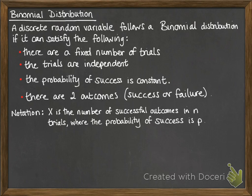And the notation for it looks like this. So if x is the number of successful outcomes in n trials, where the probability of success is p, then we write it like this. And you read it as x follows a binomial distribution with n trials and probability of success is p.